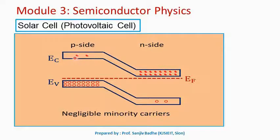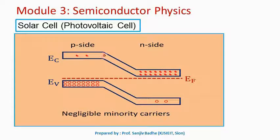Look at the electrons in the conduction band on the p-side — they can easily climb down the hill and come to the conduction band on the n-side. Similarly, holes on the n-side valence band can easily climb up the hill and reach the p-side valence band. However, the number of these minority carrier electrons on the p-side and minority carrier holes on the n-side is very, very small, so the current contributed by these minority carriers is negligible.